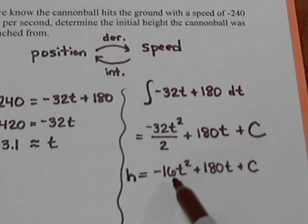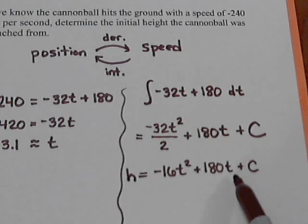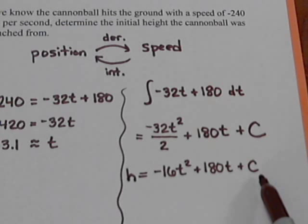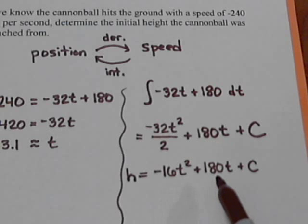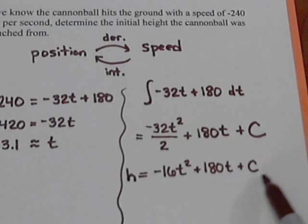And this should look familiar as our falling object formula. There's the h equals negative 16 t squared, plus 180 t plus C. Now, the problem is, we still don't know what C is.